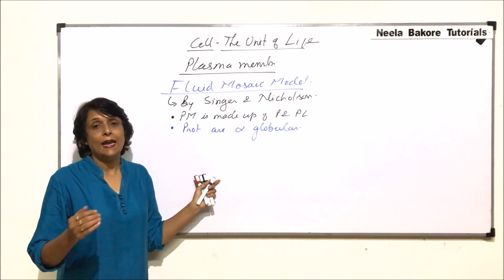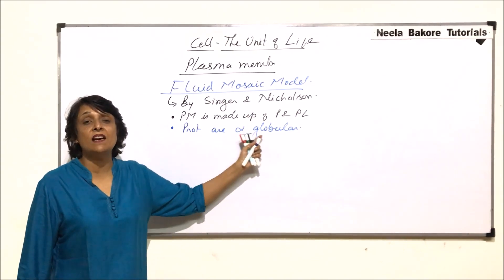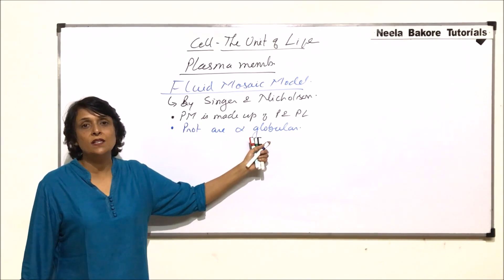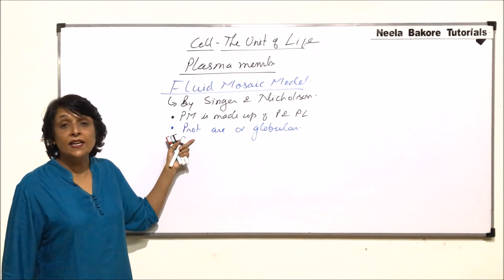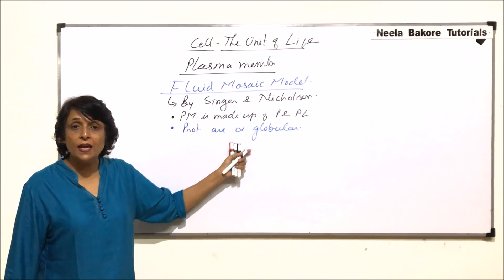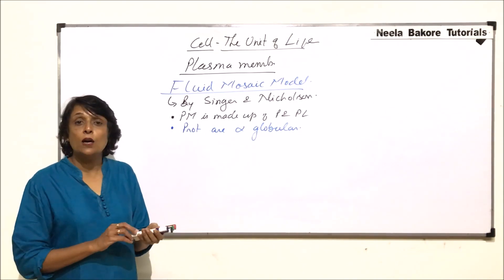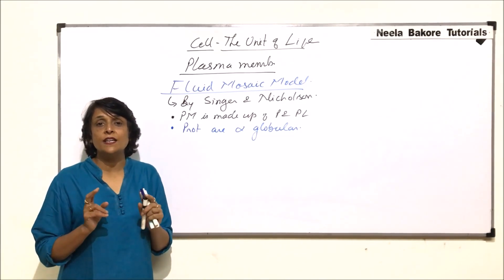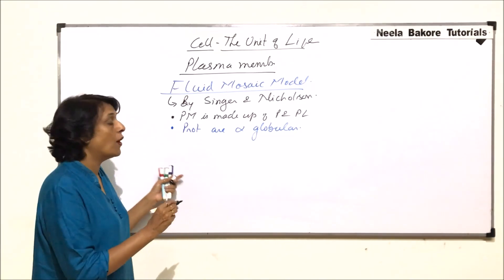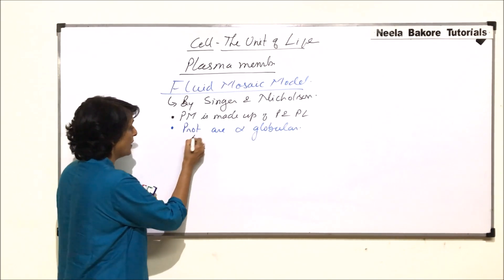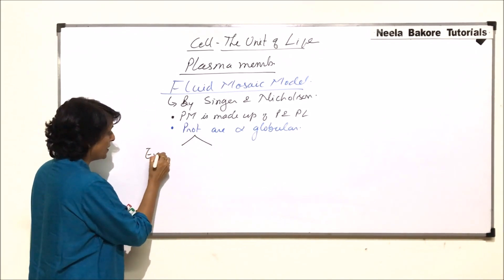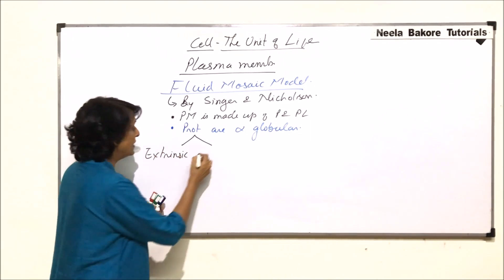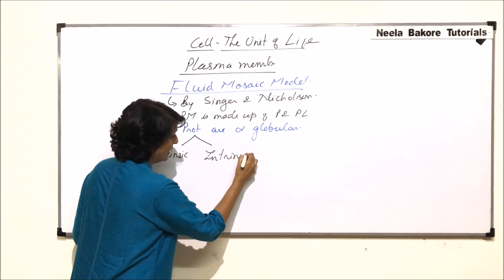Robertson in his model said that the proteins are beta fibrous. Daniele and Davson said that the proteins are alpha globular. According to Singer and Nicholson, these alpha globular proteins are classified into two categories on the basis of their position.